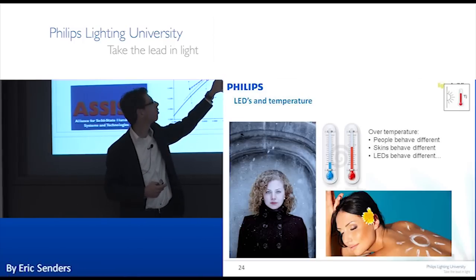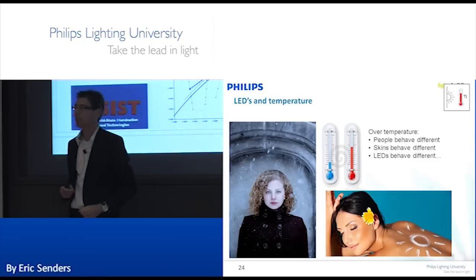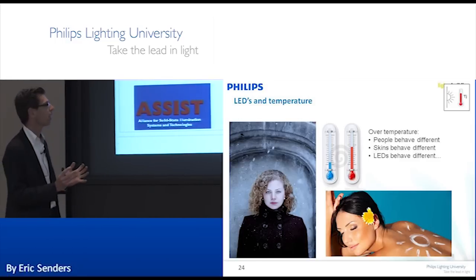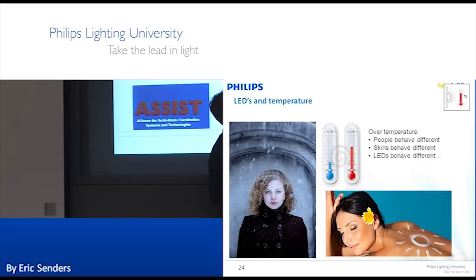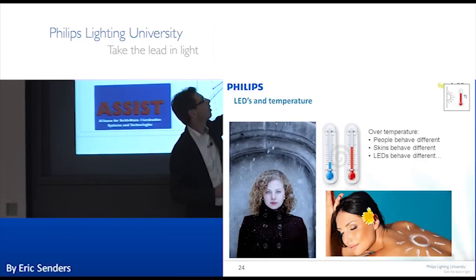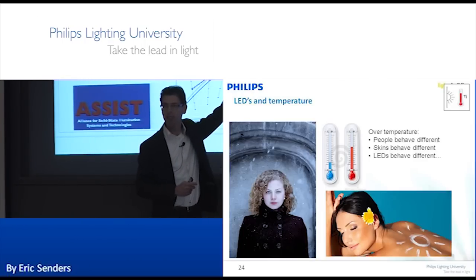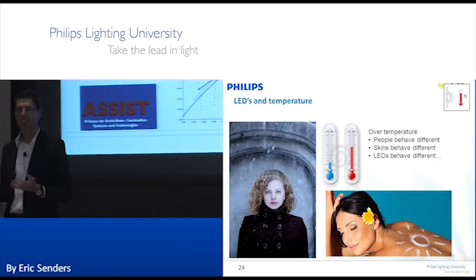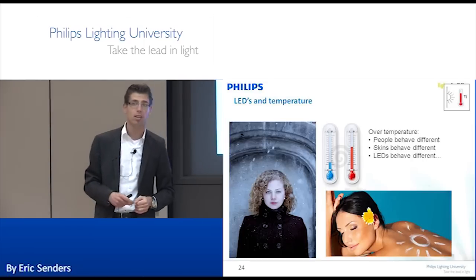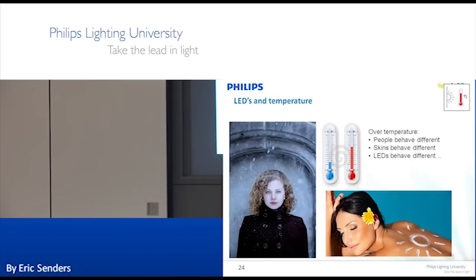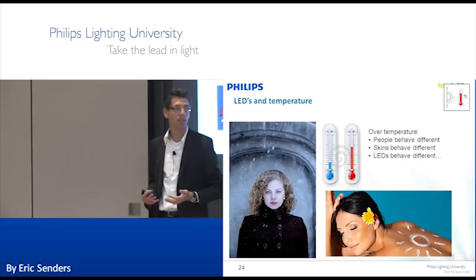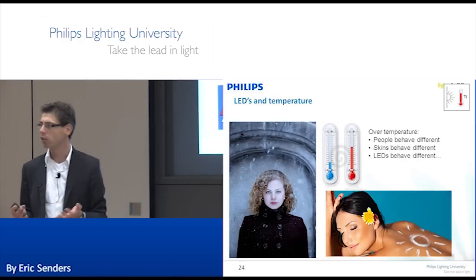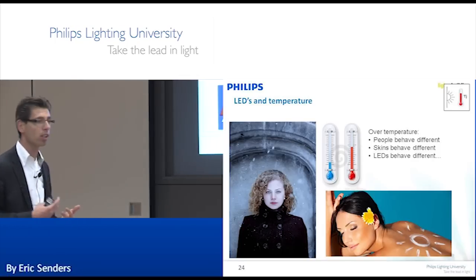The real perceived white point at cooler color temperatures is above the black body line, and at warmer color temperatures it is below. This is interesting, because we as LED manufacturers have tried everything to put our manufacturing at the black body line. Now researchers tell us the perceived white point is somewhere else. So it's an interesting discussion — there are definitely advantages to targeting a different color point, such as enhanced red rendering.